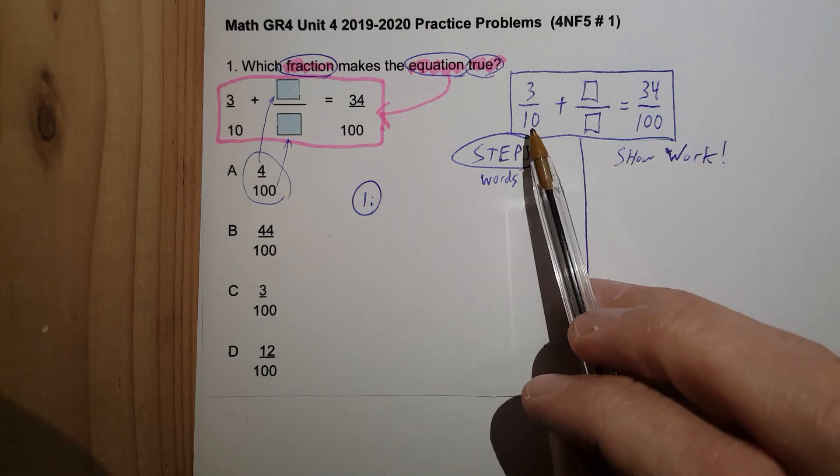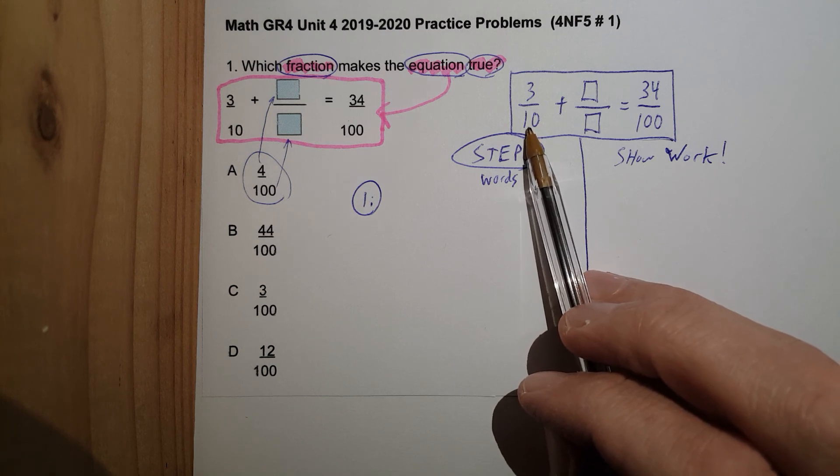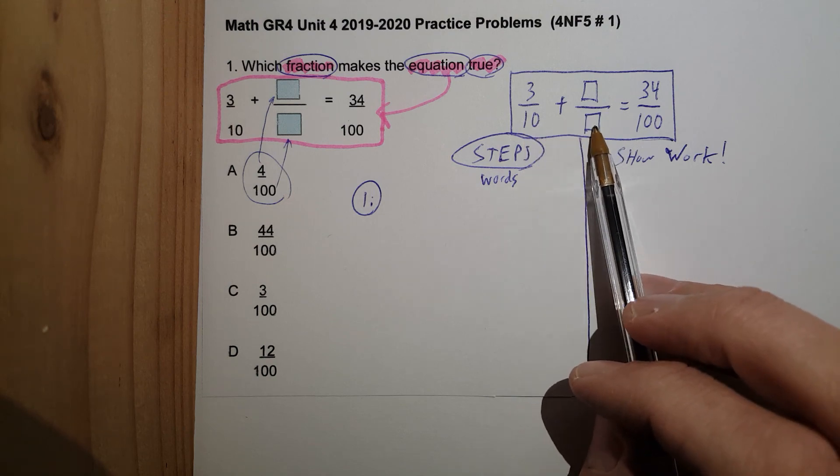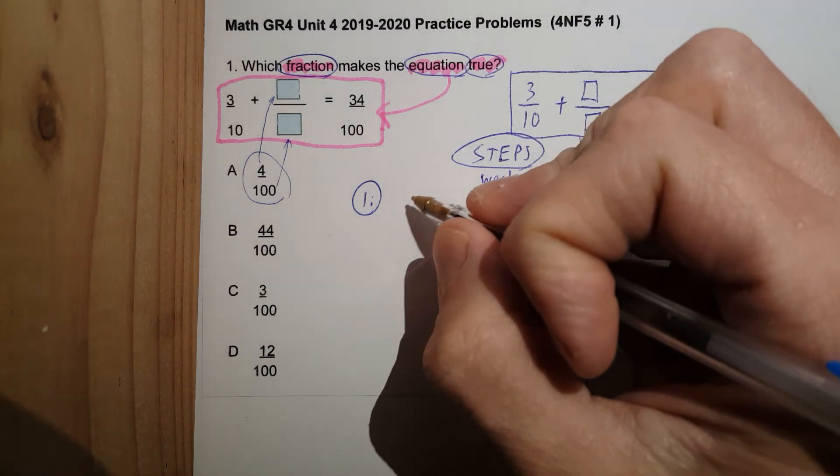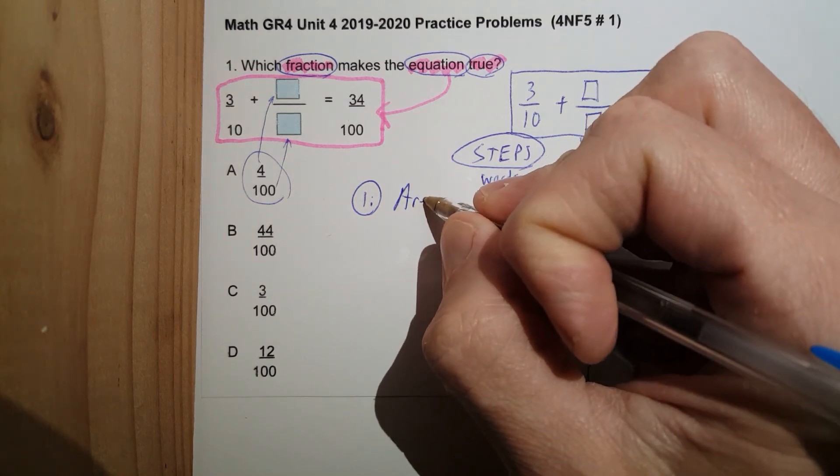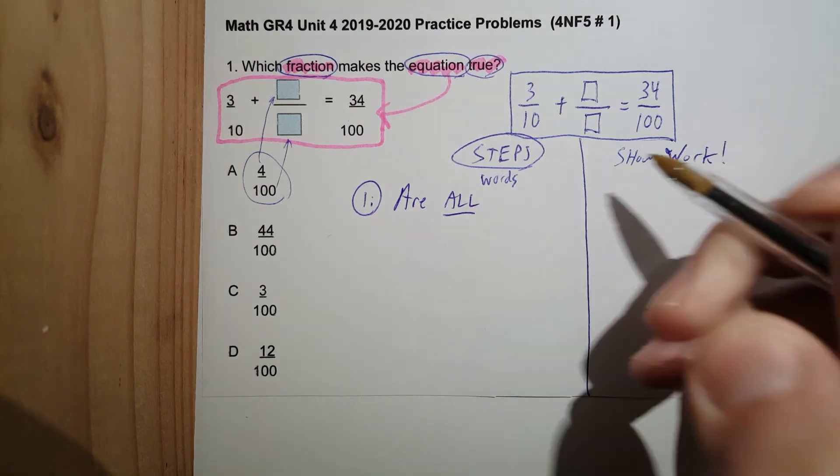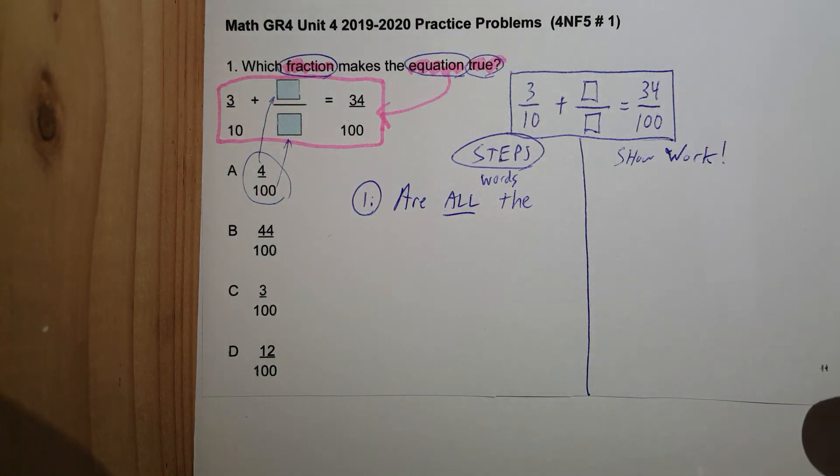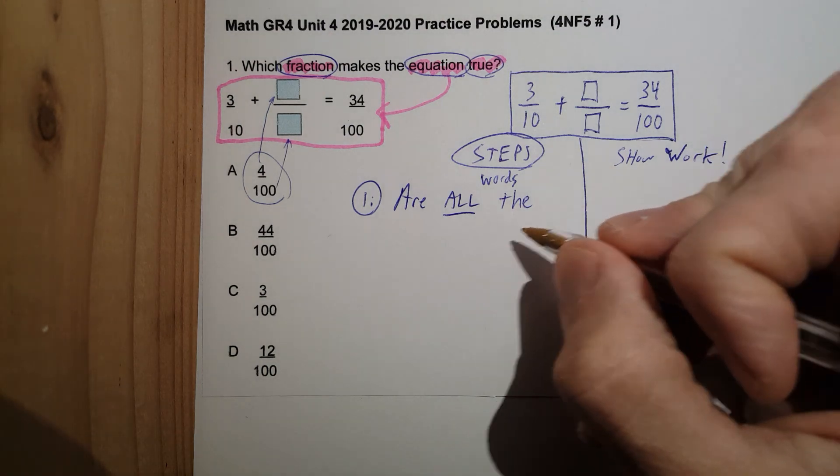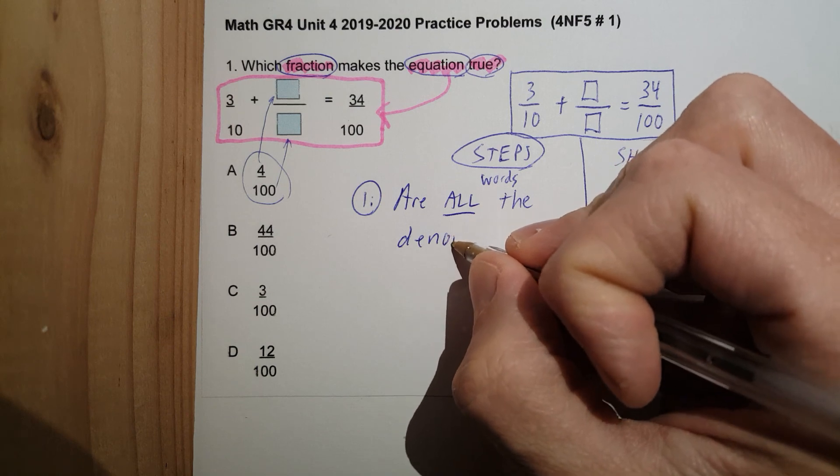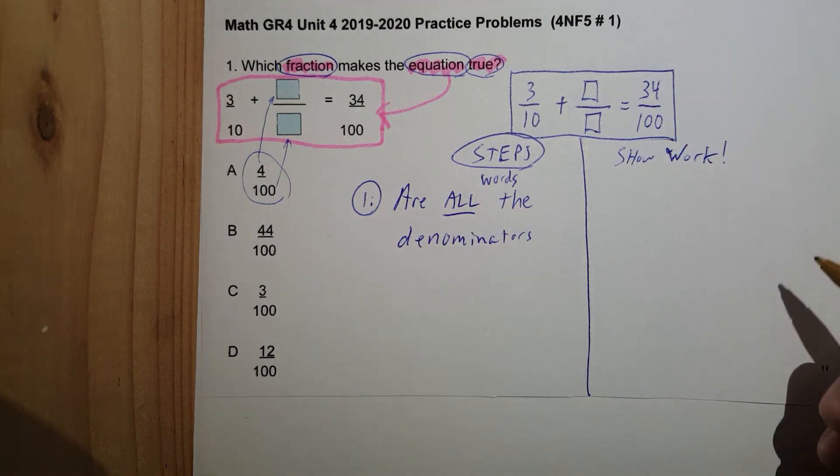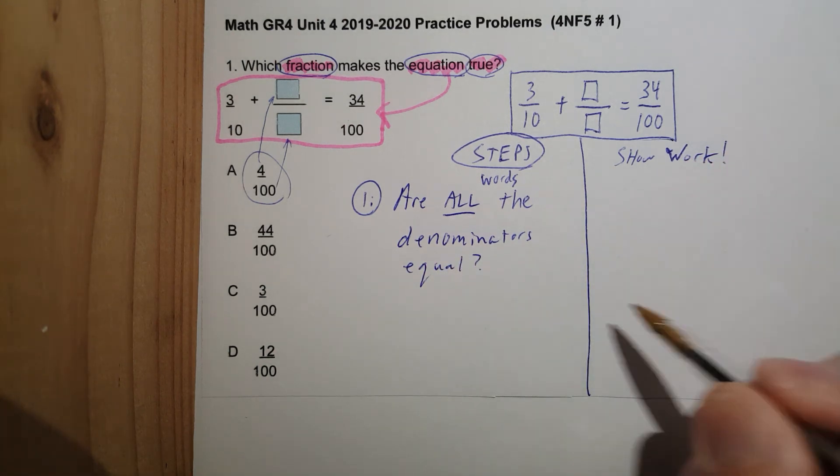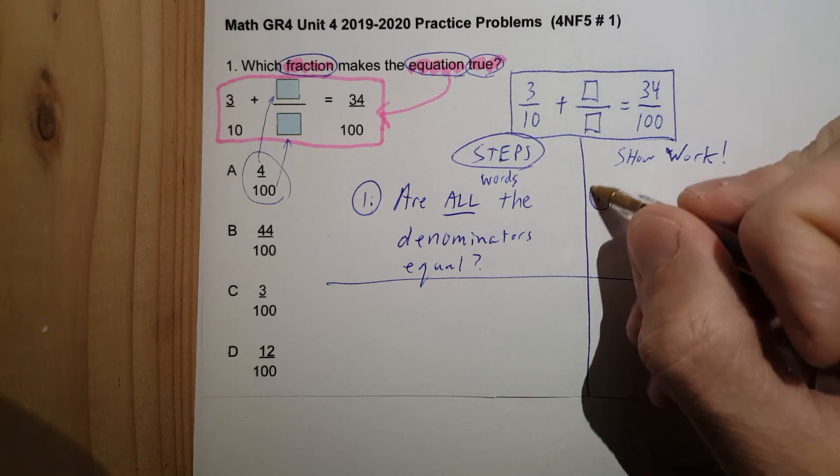So, remembering last unit. When we are looking at fractions, the first thing you want to check out is the denominator. Are the denominators all the same? Are they equal? So let's write that question. Step one. Are all the denominators equal? Question mark. Draw a line over. Do number one.